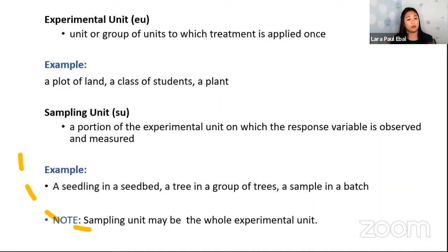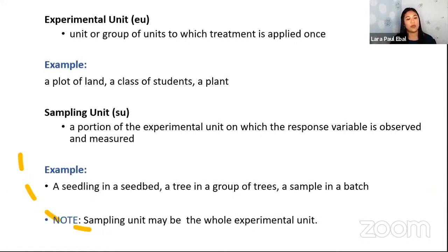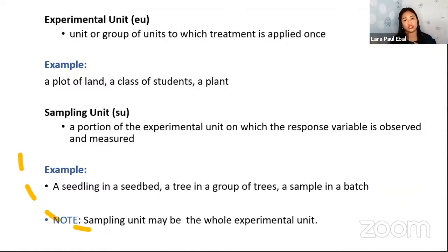Another term is the sampling unit — a portion of the experimental unit on which the response variable is observed and measured. Sometimes you cannot afford to measure the whole experimental unit, so you get subsamples. Examples include a seedling in a seedbed, a tree in a group of trees, or a sample in a batch. Note that the sampling unit may be the whole experimental unit — sometimes they are the same.